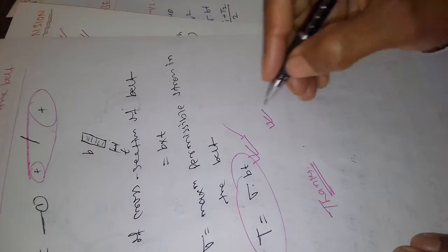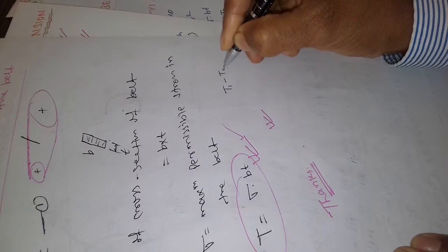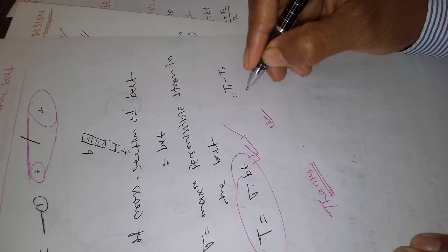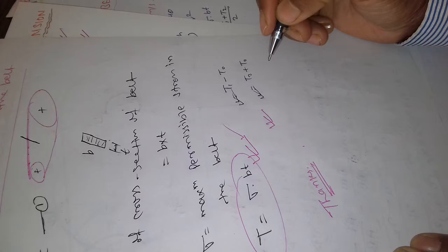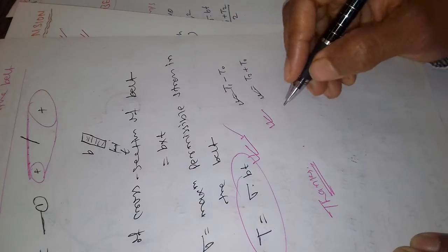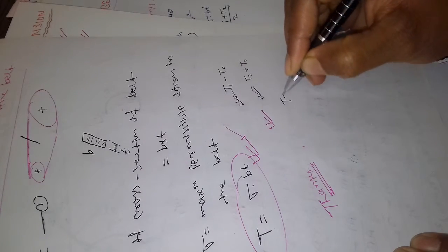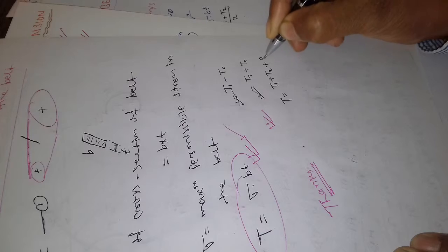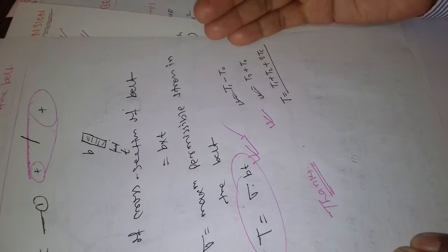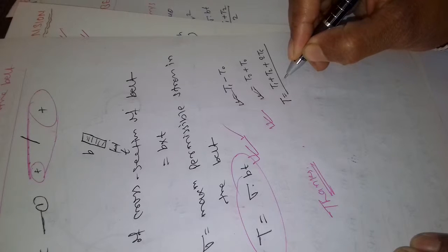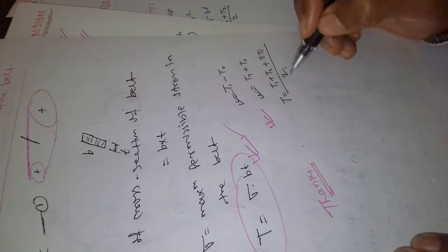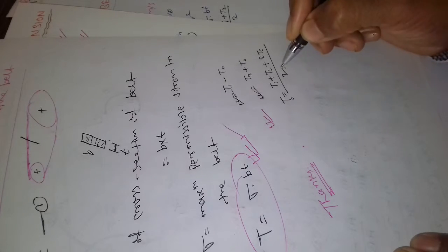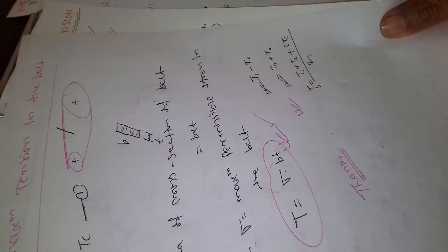The tension we call initial tension T0: on the tight side you will see T1 minus T0, and on the slack side T0 minus T2. When you consider centrifugal tension, T1 plus T2 plus 2Tc covers both sides. The initial tension in the belt is T0.